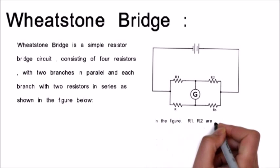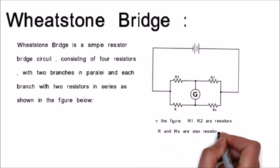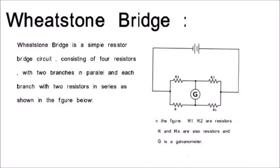In the figure, R1, R2 are resistors, R and RS are also resistors and G is a galvanometer.